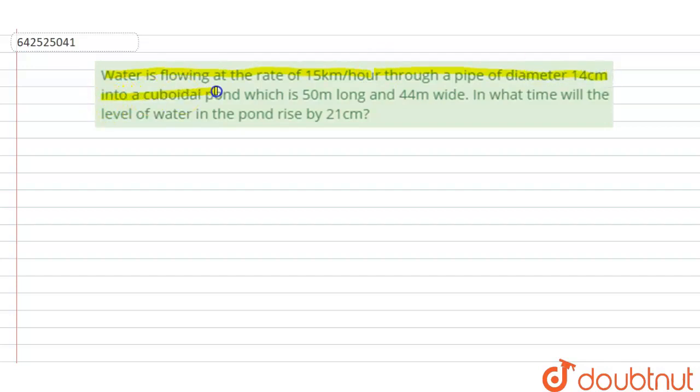The pond is 50 m long and 44 m wide. In what time will the level of water in the pond rise by 21 cm?